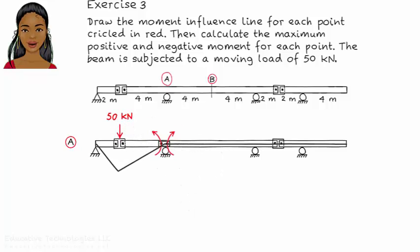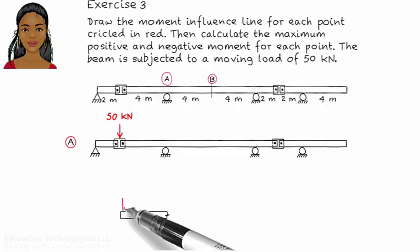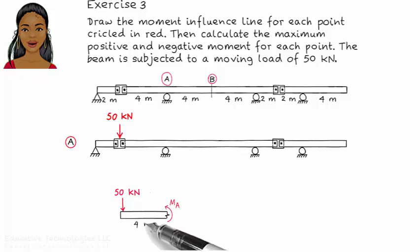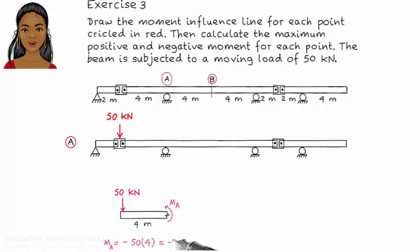To determine the magnitude of this negative moment, place the load at the hinge and analyze the beam. The analysis shows that the maximum negative moment at A has a magnitude of 200 kNm.